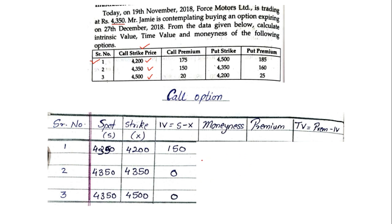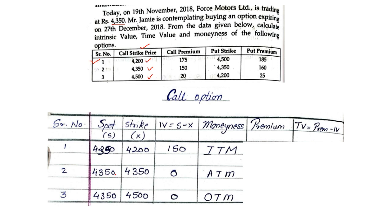For moneyness: the condition which is positive will be known as ITM, that is In The Money. The condition where both spot and strike are equal is called ATM, At The Money. The condition where it's a loss — though the IV will be zero — it's called OTM, Out Of The Money. So ITM is for positive, ATM is for zero where both are equal, and OTM is where it goes negative.